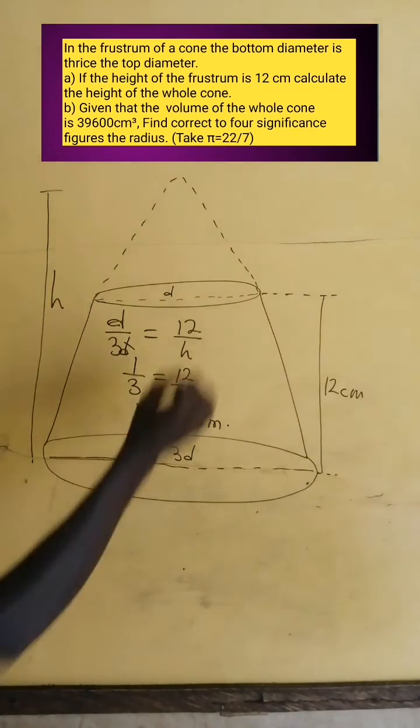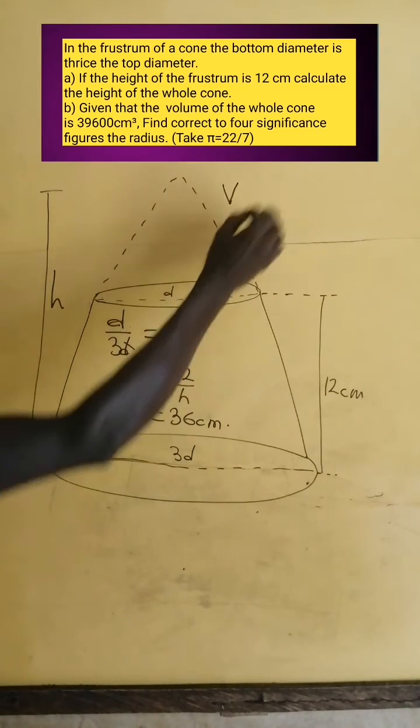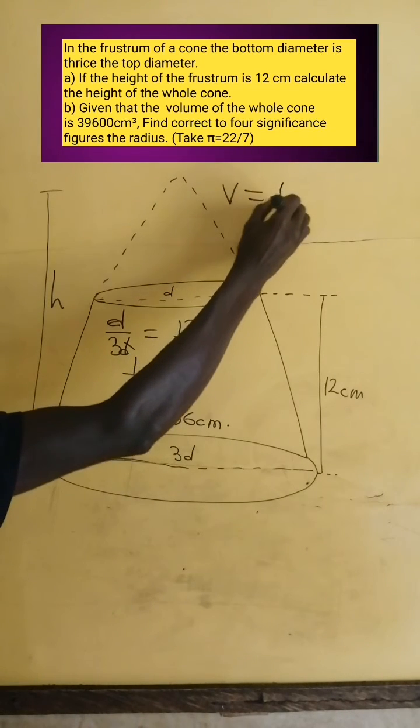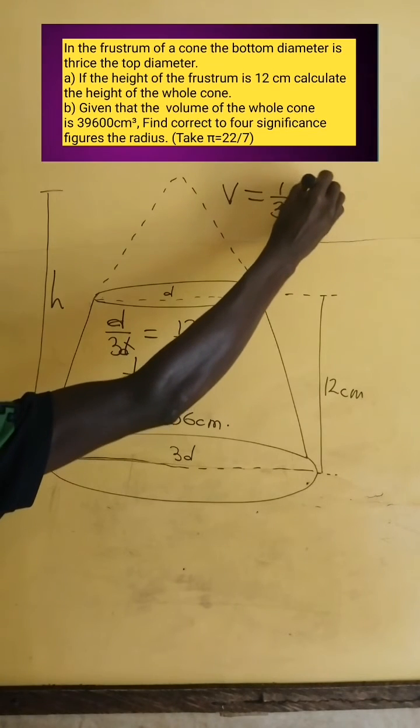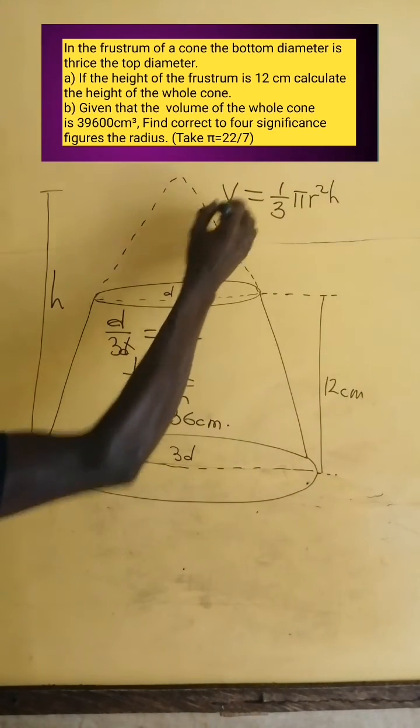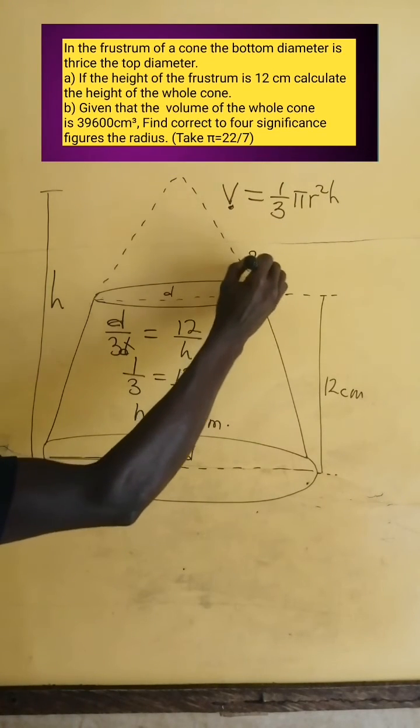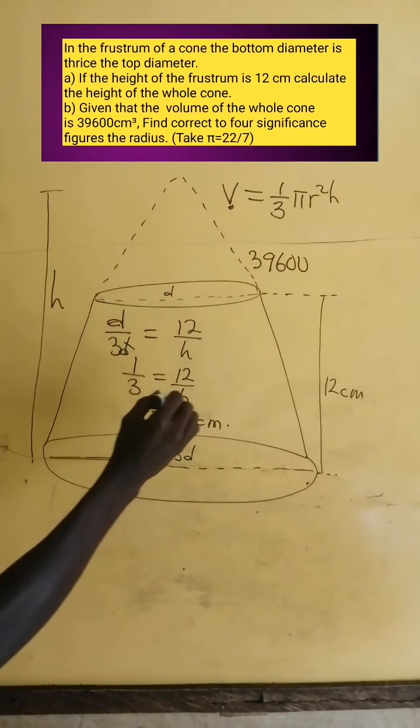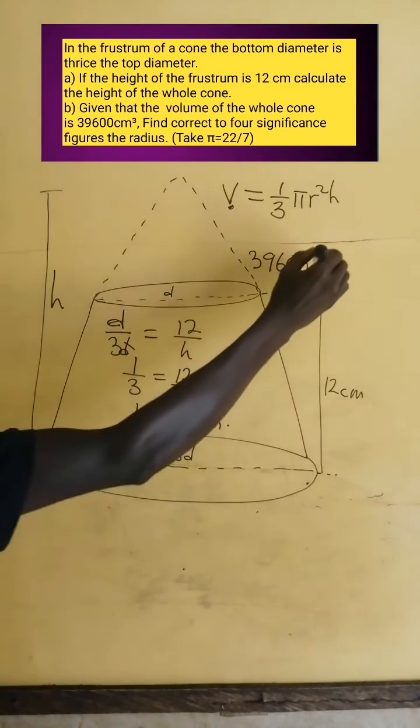We have to calculate the radius, given the volume as 39,600 cubic centimeters. We know that volume of a cone is one-third pi R squared times H. So we do simple substitution.